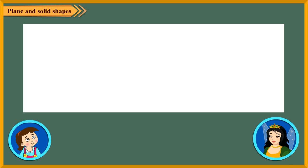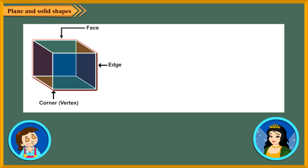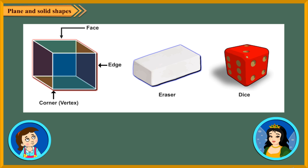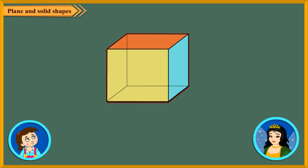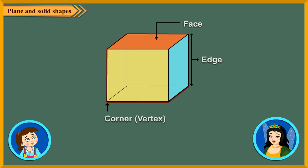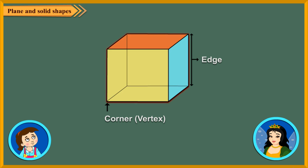We have another kind of shapes which cannot be drawn on a sheet of paper. For example, a box, eraser, dice — these are called solid shapes. Solid shapes have faces, edges, and vertices or corners. Here is a solid shape. It looks like a dice. This is a cube. It has six flat faces, twelve edges, and eight vertices, and all its edges are equal.